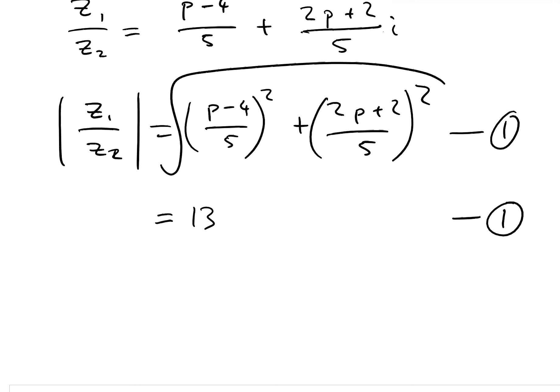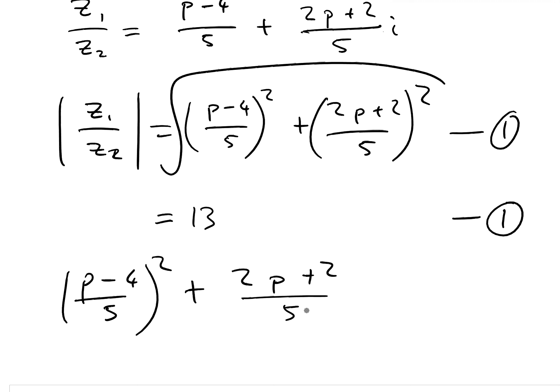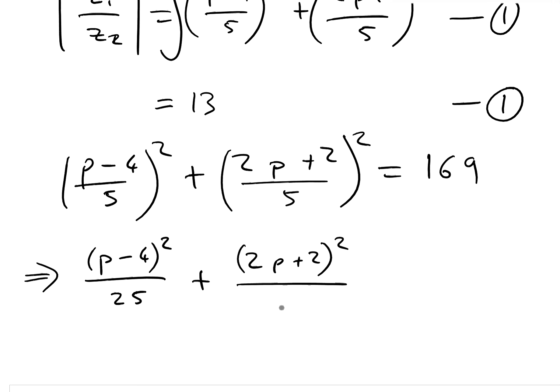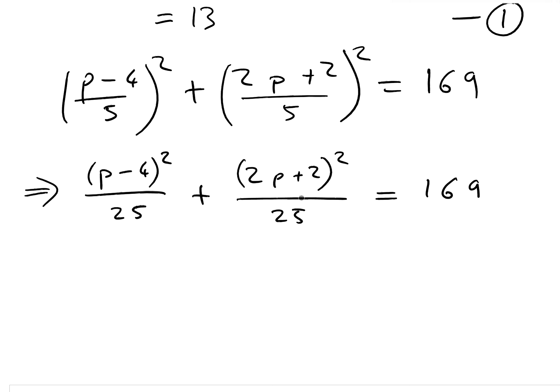To get rid of the square root, I'll square both sides, giving us p minus 4 over 5, all squared, plus 2p plus 2 over 5, all squared, equals 13 squared which is 169. A fraction squared means we square the top and the bottom separately, so we get p minus 4 all squared over 25, plus 2p plus 2 all squared over 25, equals 169. Combining the fractions gives p minus 4 all squared plus 2p plus 2 all squared, all over 25, equals 169.